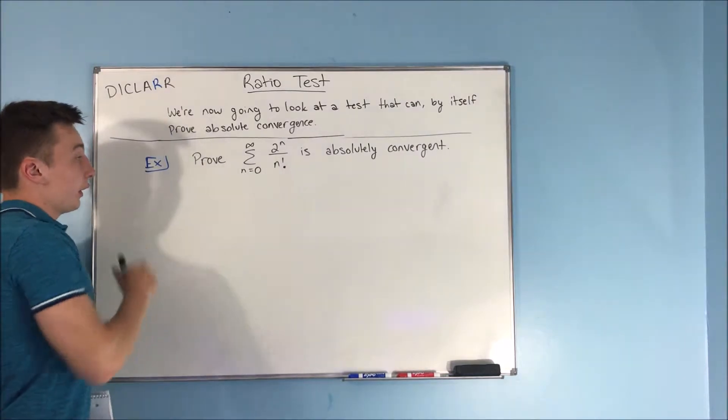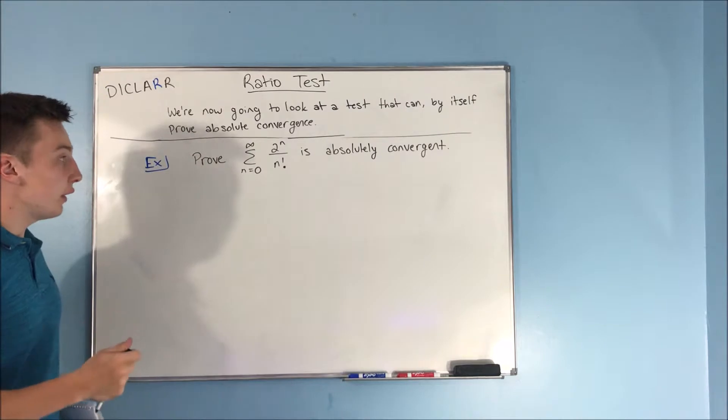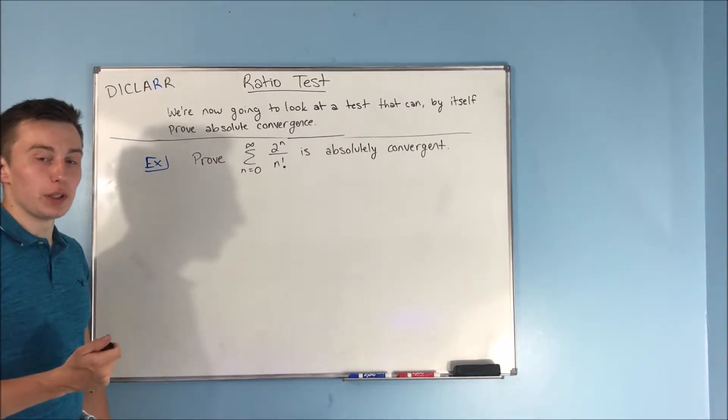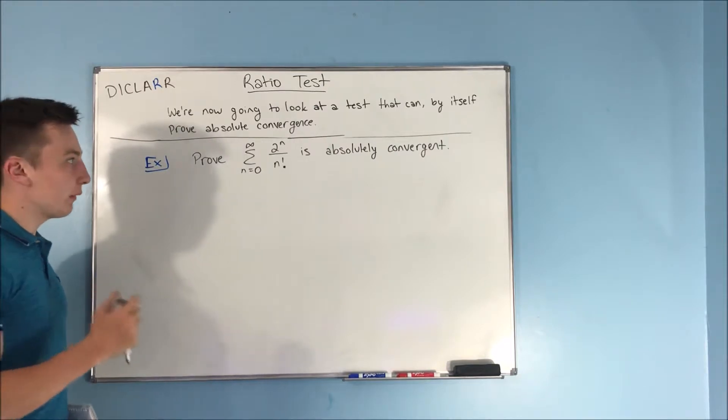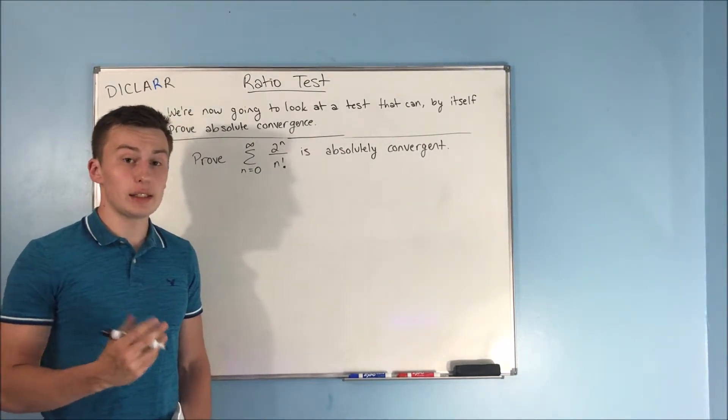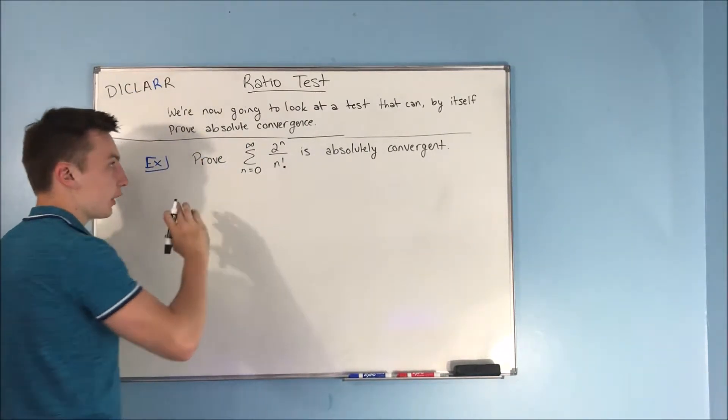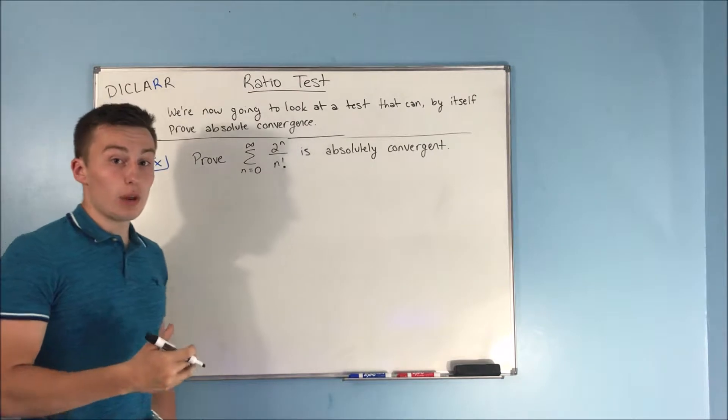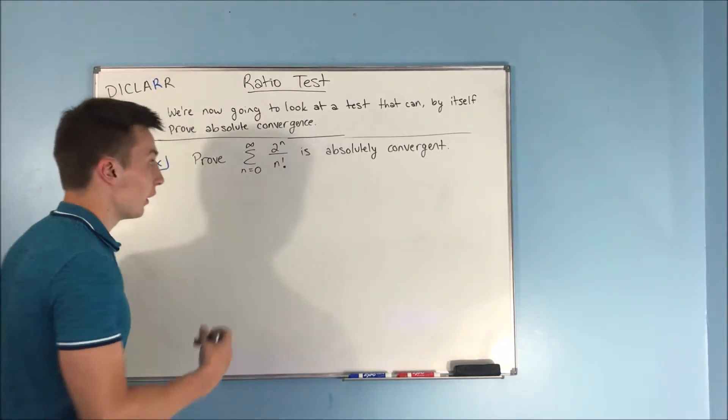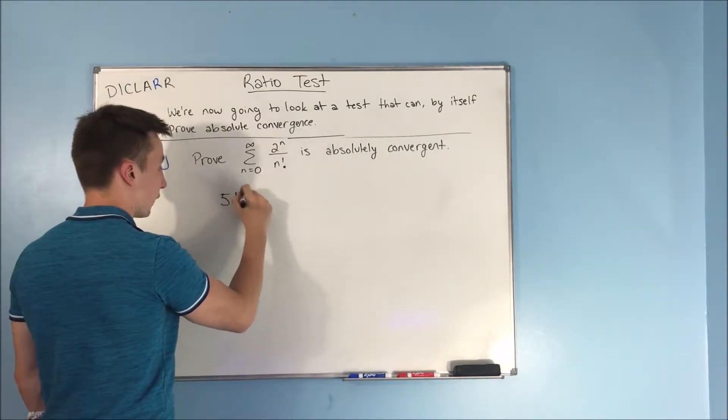Our example problem: we need to prove the sum from n equals zero to infinity of two to the n over n factorial is absolutely convergent. Now, before we even get started here, I want to make sure that you know what a factorial actually is. We'll just review that real quick because you're going to see factorials a lot with ratio tests. That's pretty much the go-to test when you see a factorial.